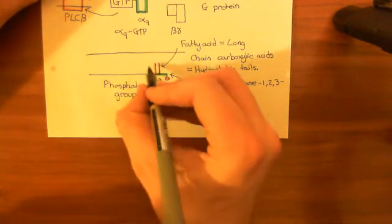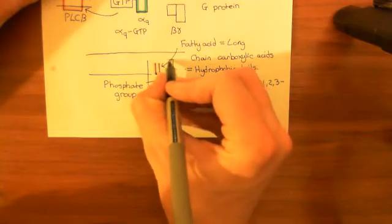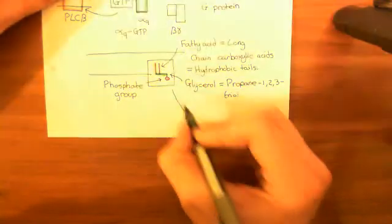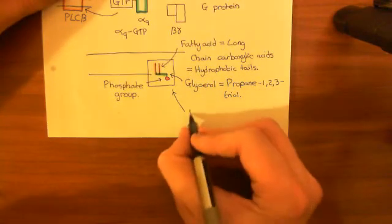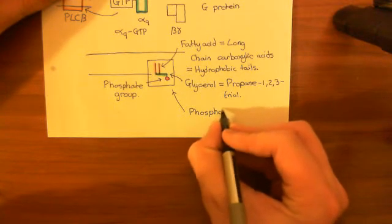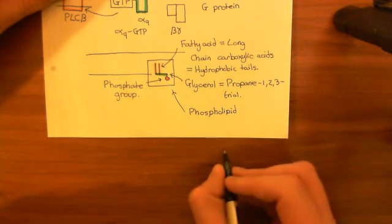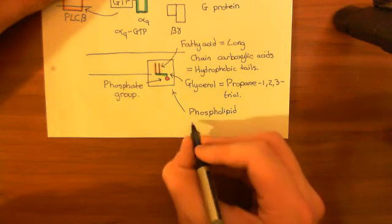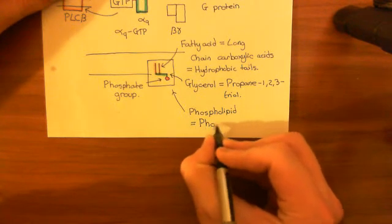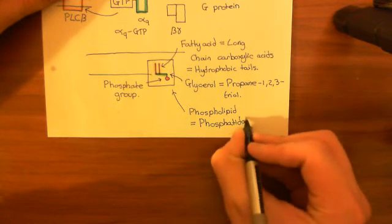This entire structure is now known as a phospholipid. The old biochemist's name for a phospholipid is to call it a phosphatidate molecule — phosphatidate is the old name for phospholipid.